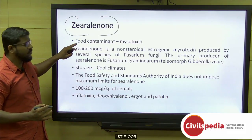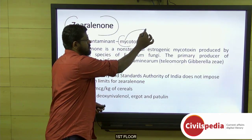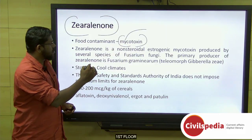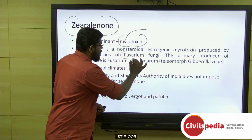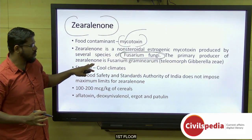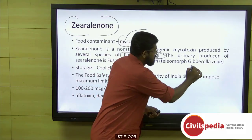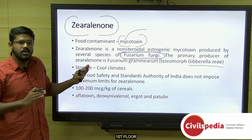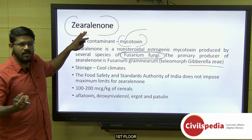Next, we look into the fungal toxin Zearalenone. First, it is a food contaminant, also called a mycotoxin because it is produced by fungi. It is a non-steroidal estrogenic mycotoxin produced by several species of Fusarium fungi. The primary producer of this mycotoxin is Fusarium graminearum, also popularly called Gibberella zeae.